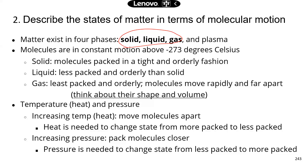One thing to keep in mind is that molecules are in constant motion if it's above a certain temperature. You don't need to memorize that temperature — that's very advanced information in physics. It's either zero Kelvin or minus 273 degrees Celsius. So above that temperature, even though you can't see it, molecules are in constant motion.